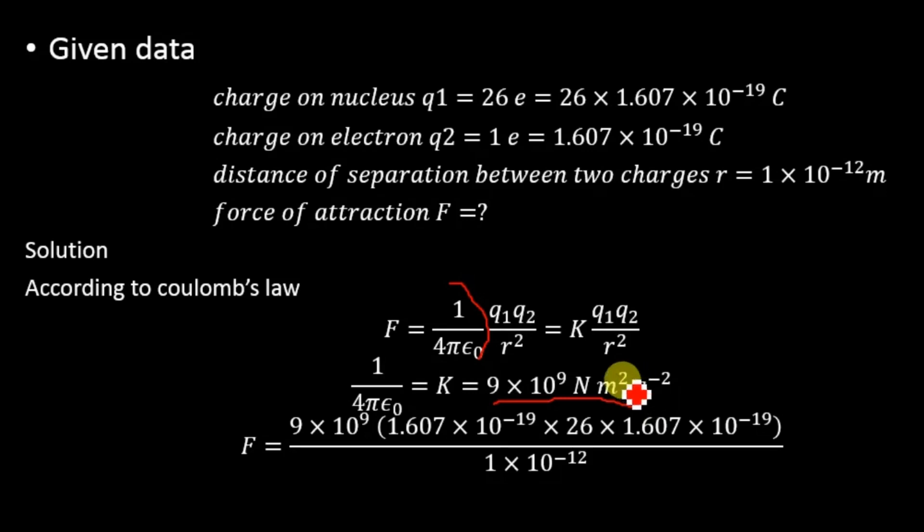Substituting the values in Coulomb's law: F = 9 × 10^9 (this is K) × 1.607 × 10^-19 (the value of q2, which is 1 electron) × 26 × 1.607 × 10^-19 (the charge on q1).